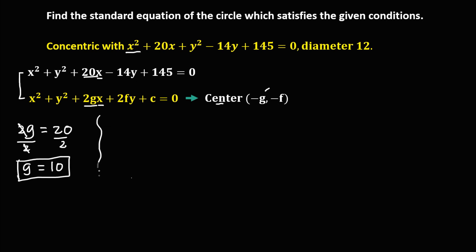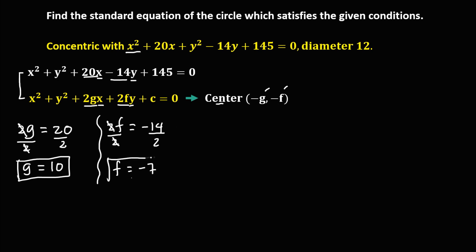To solve for f: we have the y term, so 2f is equal to negative 14. Dividing both sides by 2, f is equal to negative 7.